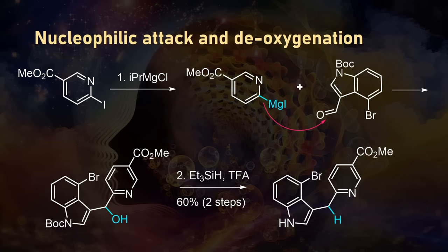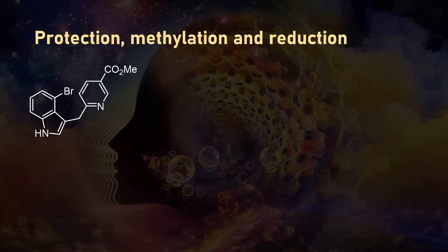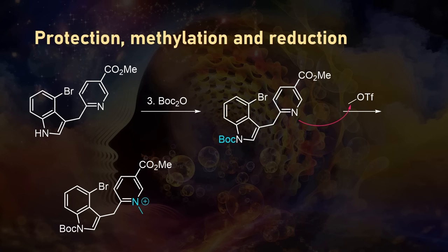The acid used in this step removed the N-Boc protecting group, so they reinstalled that afterwards. After this protection, the most nucleophilic group is the pyridine nitrogen, so it was methylated with methyl triflate. This gave a pyridinium salt which was reduced with sodium borohydride.